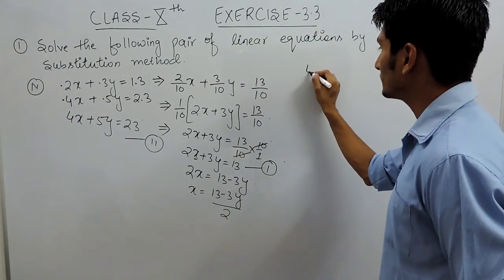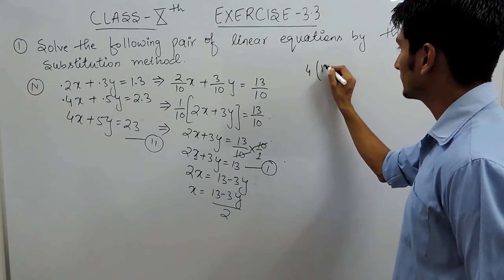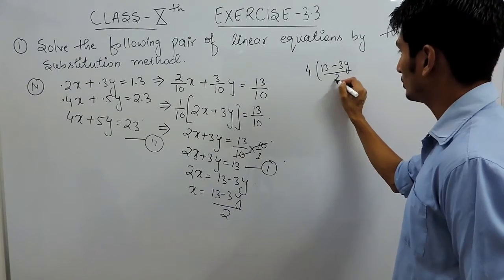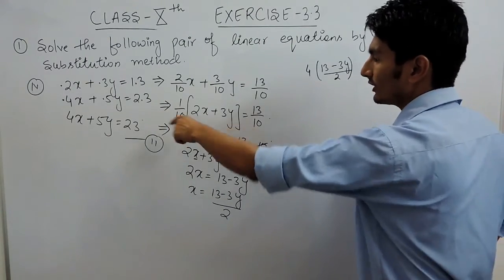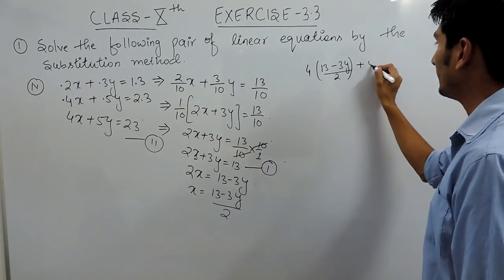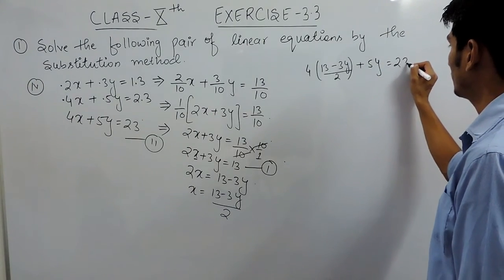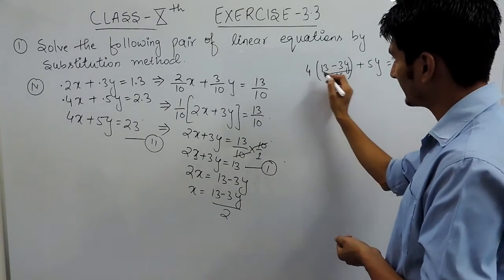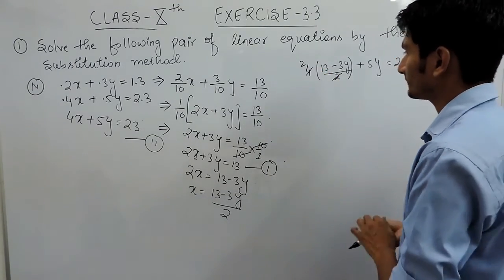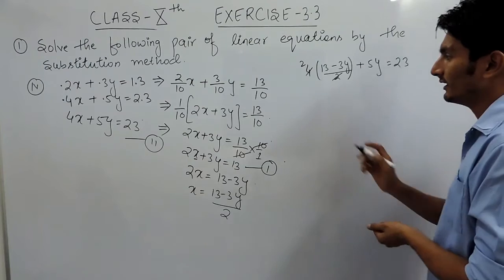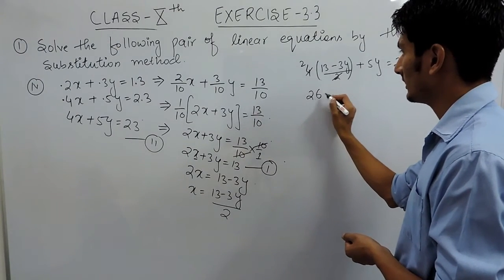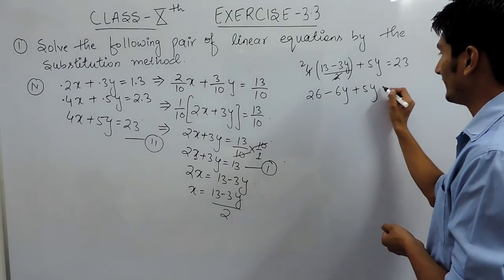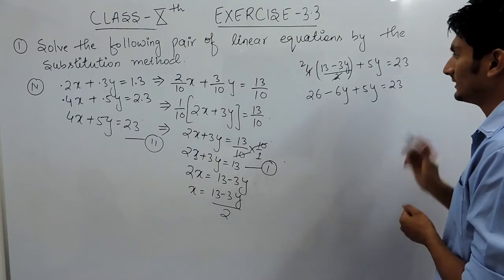So the equation becomes 4 into (13 minus 3y) upon 2, and the rest of the equation remains as it is. We solve this: 4 divided by 2 gives 2, so 2 into 13 is 26, and 2 into 3y is 6y. So we have 26 minus 6y plus 5y equals 23.